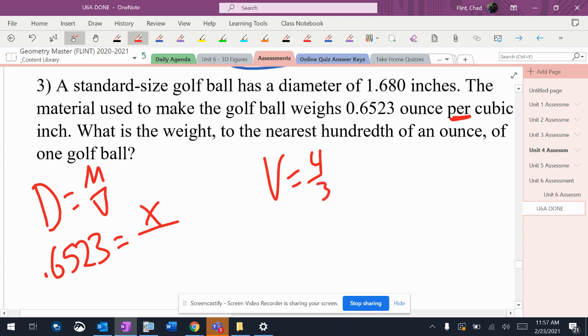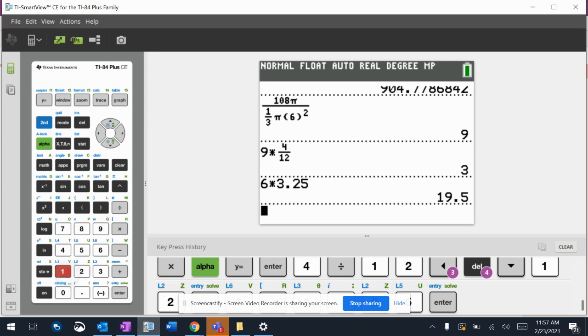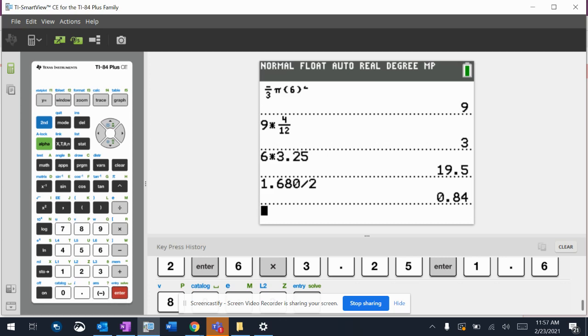So volume equals 4 thirds pi r cubed. But then it tells me that the diameter is this. I don't want the diameter. I want the radius. So 1.680 divided by 2, which I think I can do in my head. So it's 0.84.